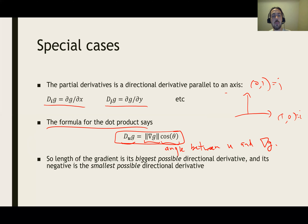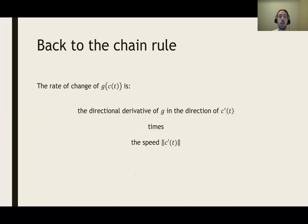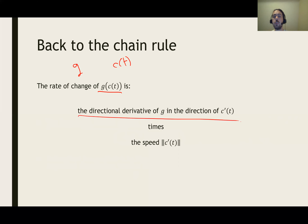The maximum directional derivative only happens when cosine equals 1, meaning the angle is 0 — so we must be moving exactly in the same direction as the gradient. Correspondingly, the smallest possible directional derivative occurs when cosine equals -1, i.e., in the direction opposite to the gradient. If we have a function g and a parametrized curve c(t) moving through space, the rate of change of g is the directional derivative of g in that direction times the speed. The faster we go and the more we point in the direction of the gradient, the faster the function changes.